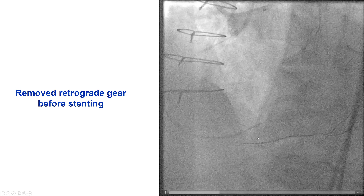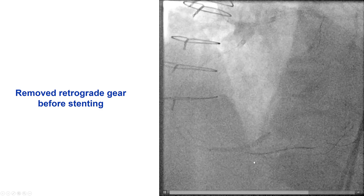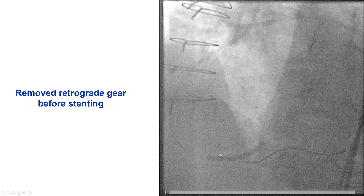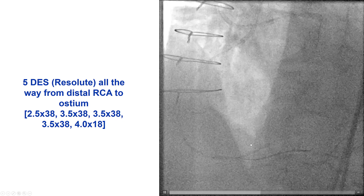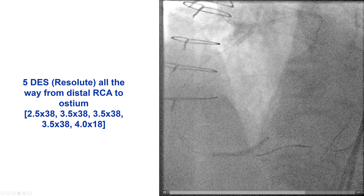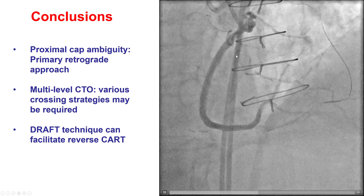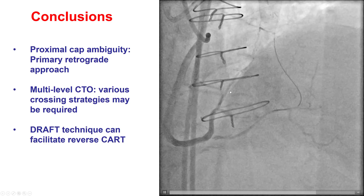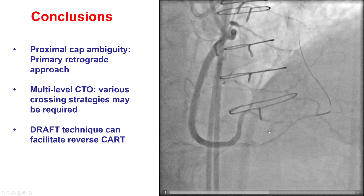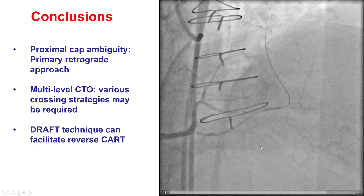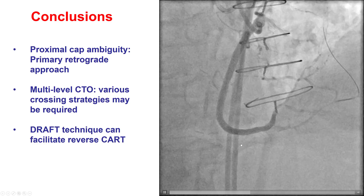Instead, what we did is we stented all the way from the posterolateral after removing the retrograde guidewire — we never want to jail the retrograde guidewire — and then stented with five drug-eluting stents, essentially all the way from the right posterolateral to the ostium of the right coronary artery. This provided a nice result. We did have flow into the posterolateral and flow into the proximal segment of the right PDA, but then there is another CTO more distally into the PDA, which we elected not to treat during this procedure.